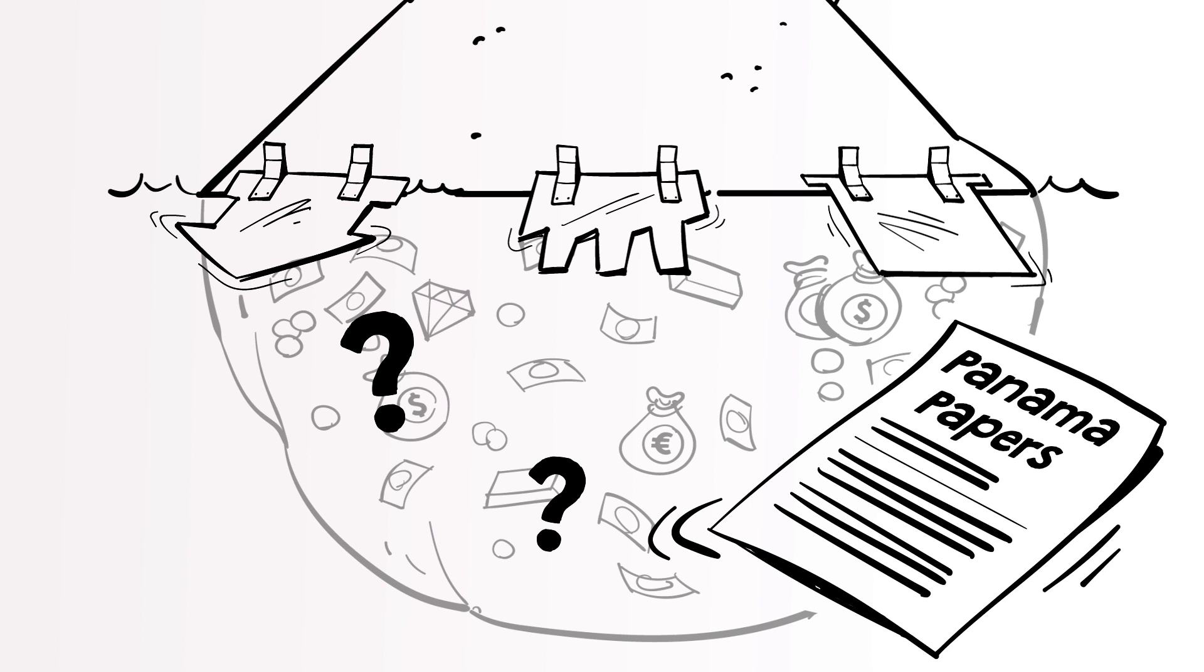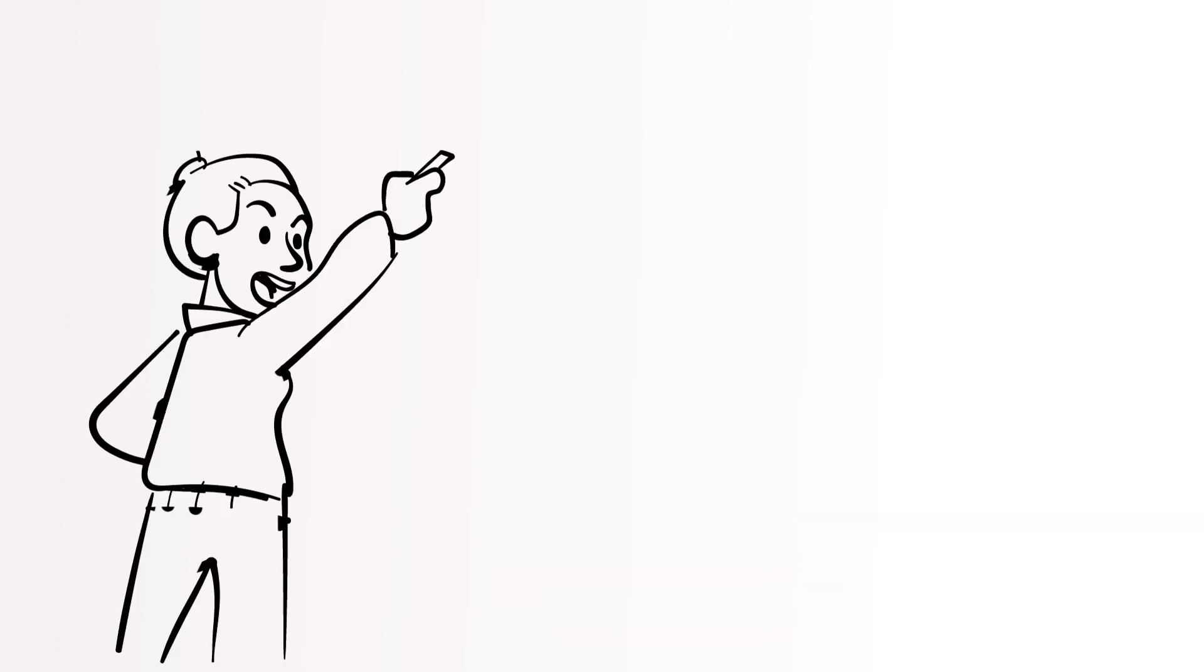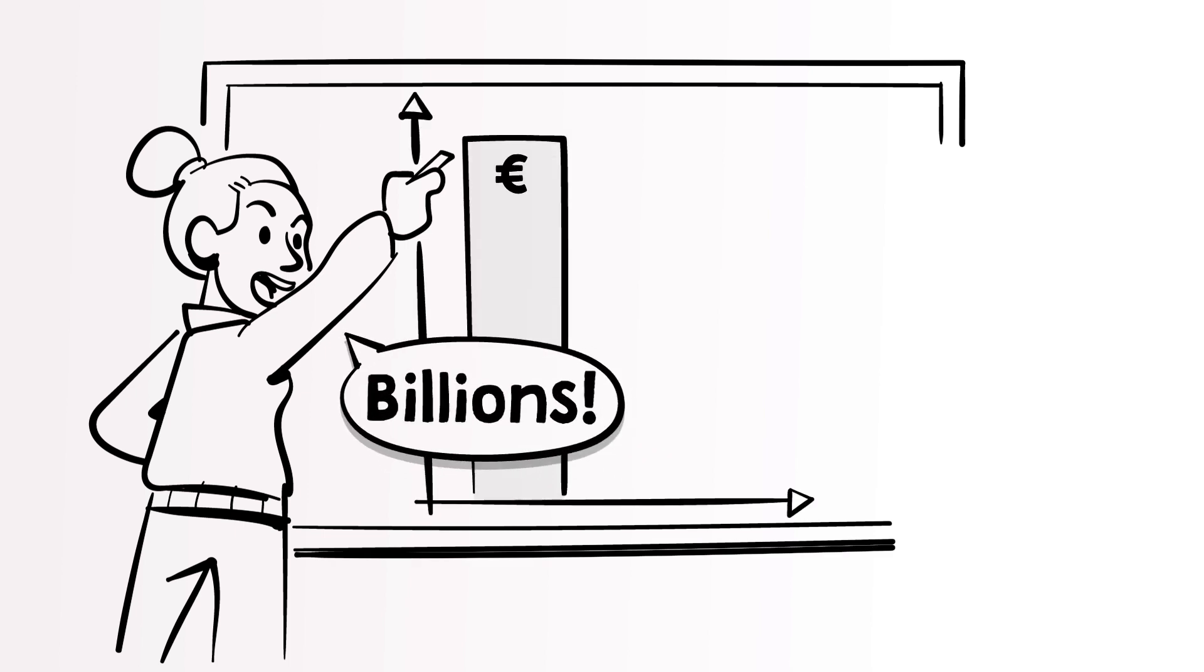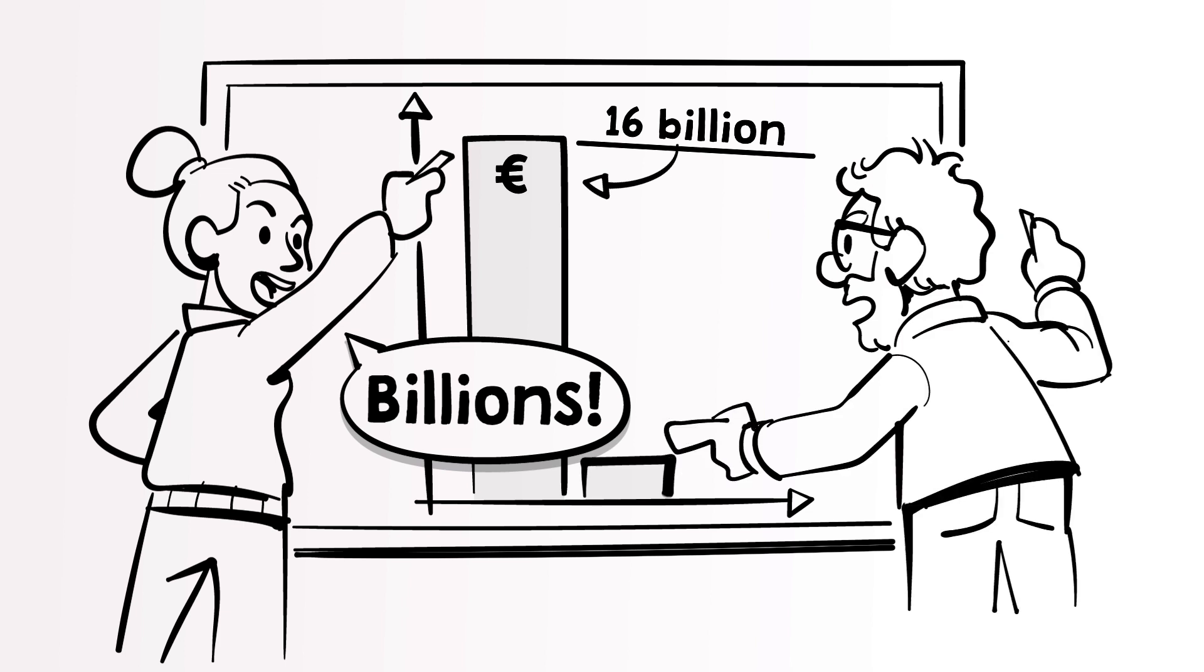Scholars constantly disagree on what the real amount could be. For instance, we, economists from Utrecht University, estimate the amount of money laundering in the tens of billions of euros per year in the Netherlands, with our most recent estimate being 16 billion euros, while other scholars claim that the amount is only millions.